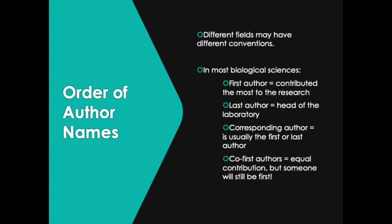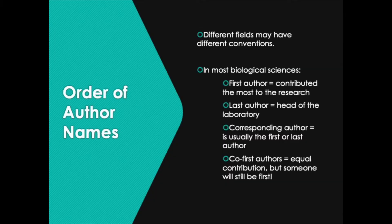The order of the author names is also quite important for journal articles, and different fields have different conventions. For example, some fields in science list all the authors alphabetically regardless of who contributed the most or who is the head of the laboratory. But for most of the life sciences, the first author is the person who contributed the most to the research and usually did most of the writing. The last author is typically the head of the laboratory, and the corresponding author is usually the first or last author.